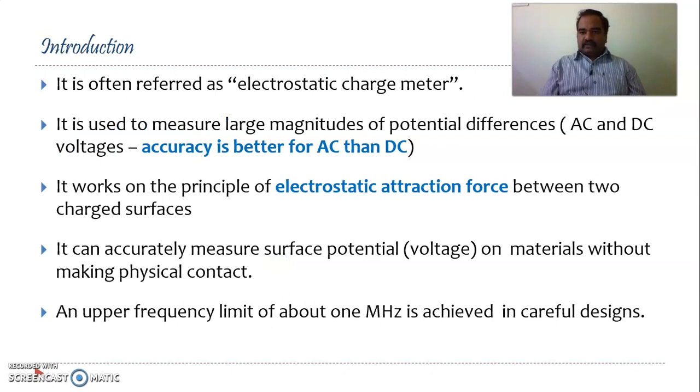Coming to the introduction of electrostatic voltmeters, it is often referred to as an ESV or electrostatic charge meter. Unlike the moving iron and moving coil instruments which you might have used in our laboratories which work on magnetic fields, an electrostatic voltmeter works on static electric fields. It is capable of measuring large magnitudes of voltages, both AC and DC voltages. In fact, the accuracy is better in terms of AC rather than DC voltages.